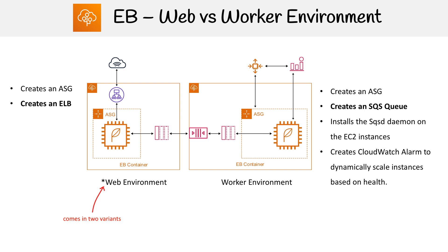Let's talk about the components involved so we have an idea of how they differ. On the left hand side, we have our web environment, and this comes in two variants, which we'll talk about in another slide. The idea is that you have EC2 instances — maybe one, maybe multiples — running in an auto scaling group. It also creates an elastic load balancer for you, which is optional if you want to save money. And that goes out to the internet, so it's a very simple setup.